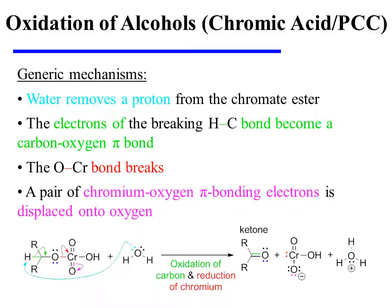As this happens, the oxygen-chromium bond breaks and those electrons are placed on chromium as a lone pair of electrons. This reduces the chromium. Finally, a pair of chromium-oxygen pi-bonding electrons is moved onto oxygen so that it holds the formal negative charge.